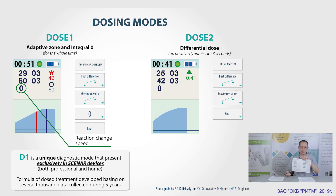This parameter indicates the quality of a dialogue, or in other words, the speed of interaction between the device and the human body. We also can see two vertical lines on the graph — blue and red — and also two indicators that look like an asterisk and a circle with digits below them. These are indicators of dose and zero.